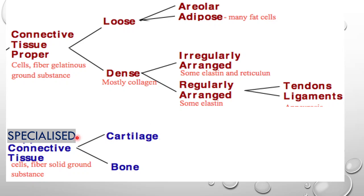The third type is specialized connective tissue, which includes cartilage, bone, and blood. When the ground substance is solid, they are cartilage and bone. If the ground substance is completely fluid, then it is blood — a type of connective tissue.